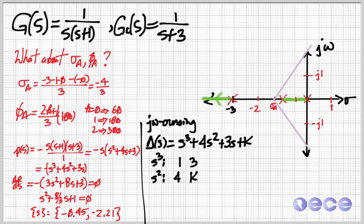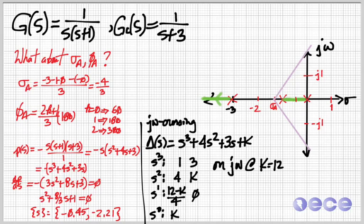And we're going to use Routh Hurwitz to find the value of k so that we go unstable. So we're looking for the marginally stable case. So we calculate b1 as four times three minus k divided by four. And s zero will just be k. So we're on the j omega axis at k equals 12. Because at that point, this value s one, the b1 term turns into zero, which implies that we're marginally stable.